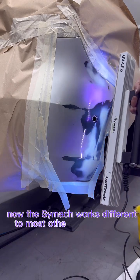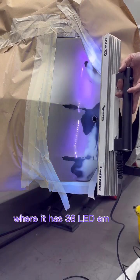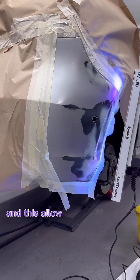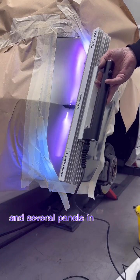Now the Simac works different to most others on the market where it has 36 LED emitters along a 50 centimeter center strip, and this allows the user to work over larger areas and several panels in sequence.